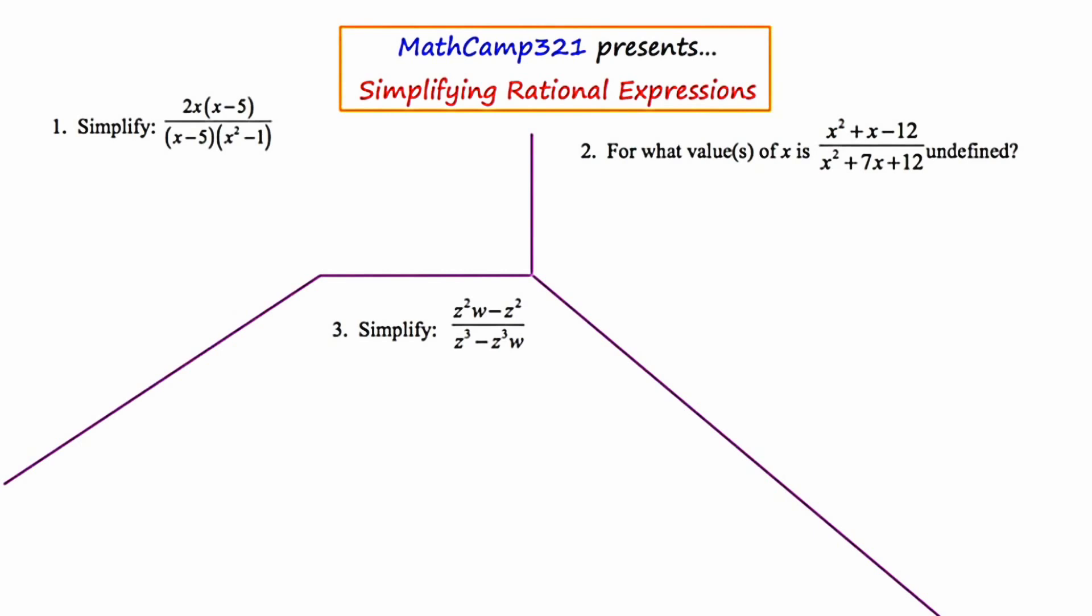So get excited. In number one, they're asking us to simplify 2x times x minus 5 over x minus 5 times the quantity x squared minus 1. Well, here we have a fraction that's algebraic and like any other fraction that you may have learned about in fourth grade, you want to make sure that your final answer when you're simplifying is completely reduced.